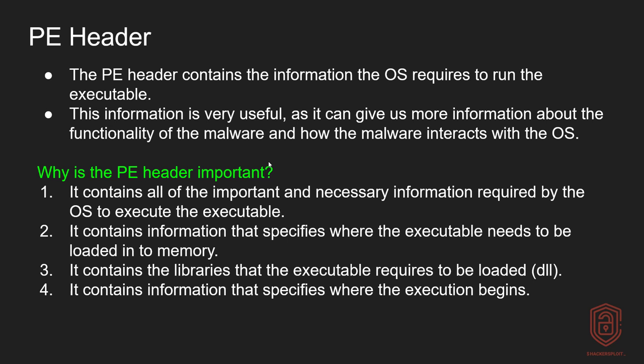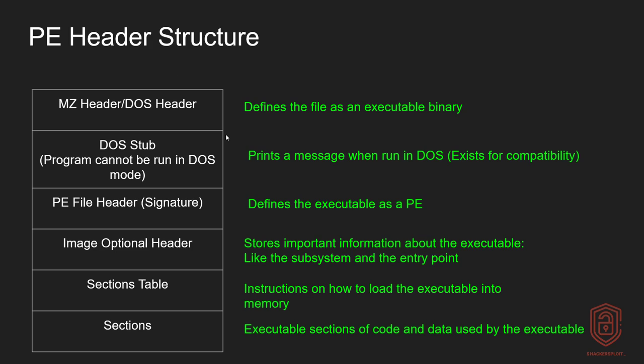Now that we understand why it's important, let's take a look at the structure and break it down to understand the various sections, as we've already been doing earlier in this series in the static analysis section. Let's start off with the MZ header, or the DOS header as it's commonly referred to. What's the purpose of this header? Well, it essentially defines the file as an executable binary — it's essentially saying, I am executable. That's the purpose of the MZ header or the DOS header.